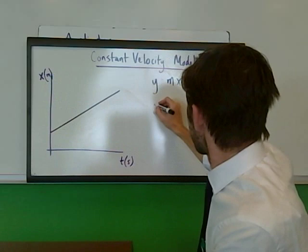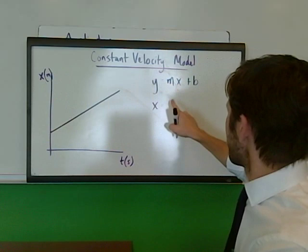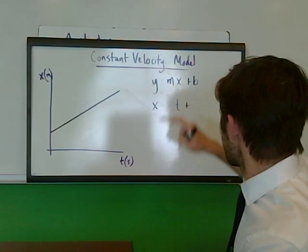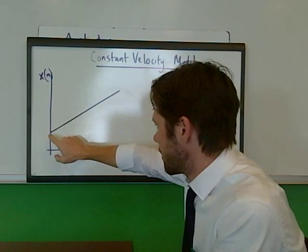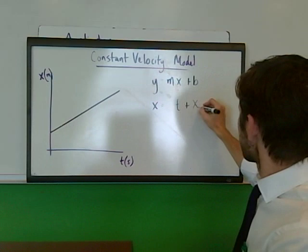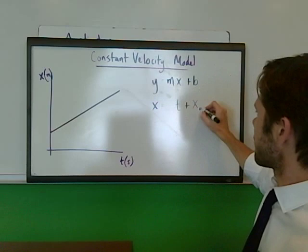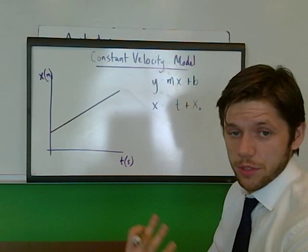And we'll come back to m in just a second. The x variable in this scenario is t plus the y intercept. Well, the y intercept is the point at which the y axis is intersected by the line. And this right here would represent, for position, the initial point of the object's position. And so we're going to call that x sub not, or x not. It's a little small o that we're writing as a subscript for the x. And that represents initial position. So this would be where the object's located initially.